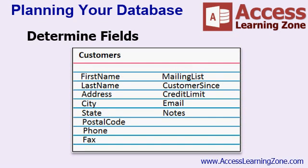Also take note that I did not put any spaces in my field names. I've got capital F, capital N, with no space between them. Access databases are easier to work with later on when we start getting into programming and macros if you don't have spaces in your field names. You can use spaces if you want to, but take it from me — don't use spaces. I'll explain in much more detail in future lessons.